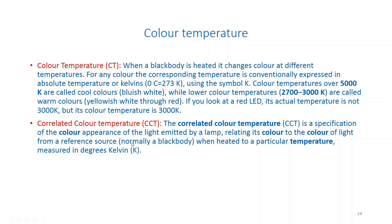Correlated color temperature (CCT) is the color appearance of light emitted by a lamp. If a light source is a true blackbody, its chromaticity coordinates fall on the blackbody curve. If not, it falls outside, but you can still correlate it to a blackbody temperature using isothermal lines perpendicular to the blackbody curve. The CCT of a source is the temperature of the isothermal line it falls closest to.